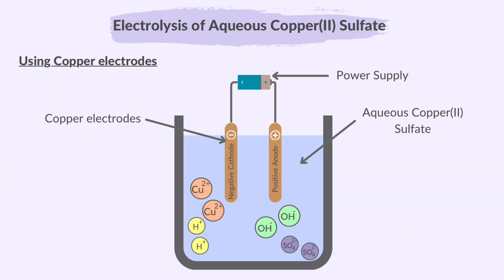What happens if we electrolyze aqueous copper sulfate using copper electrodes instead of inert electrodes? Once again, the ions present in the electrolyte will be the same: Cu²⁺, SO₄²⁻, H⁺ and OH⁻ ions. Let's first discuss what happens at the anode. Although the negative ions, SO₄²⁻ and hydroxide ions, are attracted to the positive anode, they do not change. Remember, in this case the anode is not inert. This means that the metal anode itself will react by losing electrons to form ions.